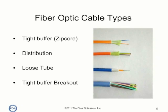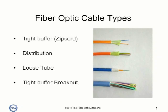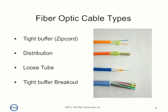The next layer of protection is a buffer that is typically extruded over this coating of the fiber to further increase the strength of the single fibers. This buffer can either be a loose tube or a tight tube.